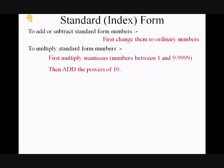To multiply standard form numbers, you first multiply the mantissas. That's the number between 1 and just less than 10, that's at the front of the standard form numbers. Then add the powers of 10. For example, 1.2 times 10 to the 4 times 3 times 10 to the 5. You multiply 1.2 and the 3 to give 3.6, and add the powers of 10 to give 10 to the 9. So the answer is 3.6 times 10 to the 9.